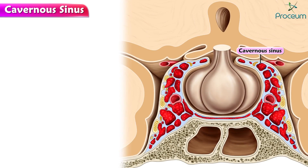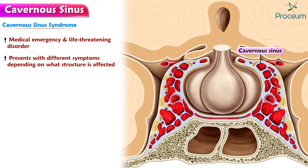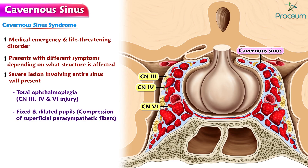Now let's learn about cavernous sinus syndrome. Cavernous sinus syndrome is a medical emergency and life-threatening disorder that presents with different symptoms depending on what structure is affected. A severe lesion involving the entire sinus will present with total ophthalmoplegia due to cranial nerve 3, 4, and 6 injury, accompanied with fixed and dilated pupils due to compression of the superficial parasympathetic fibers of cranial nerve 3.